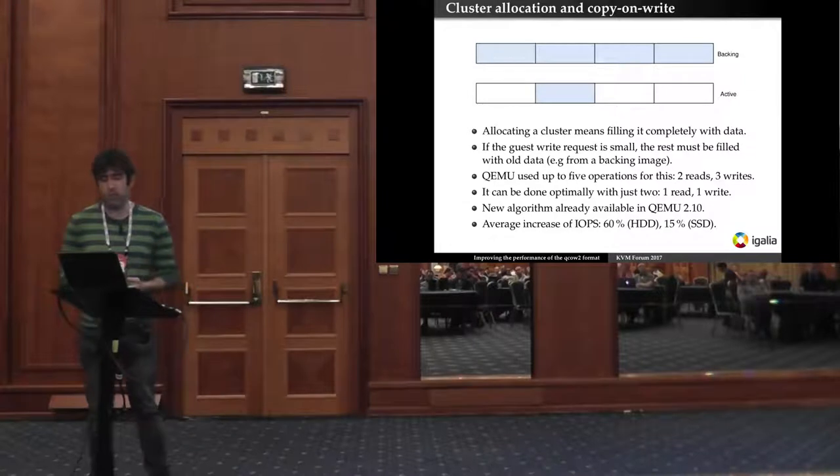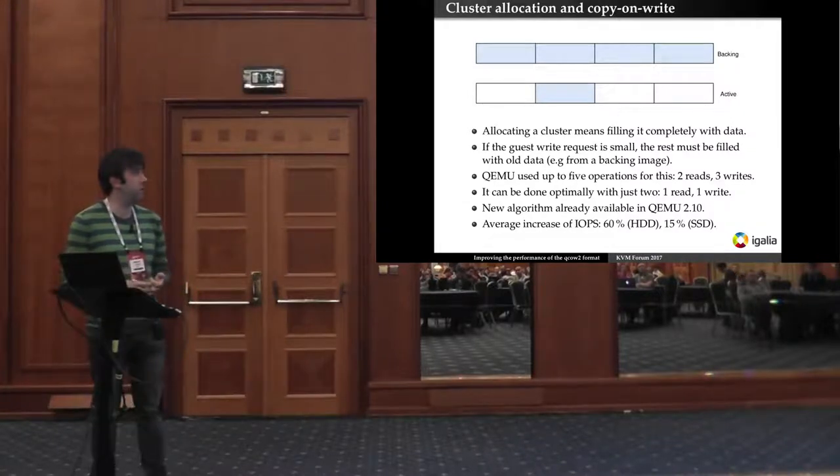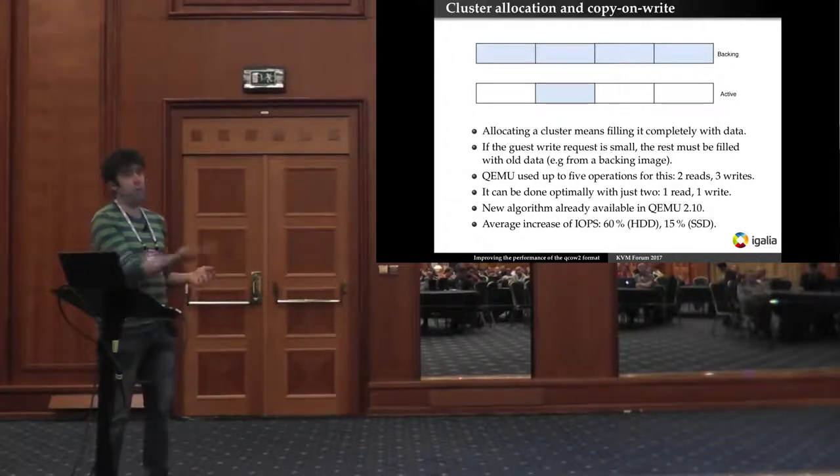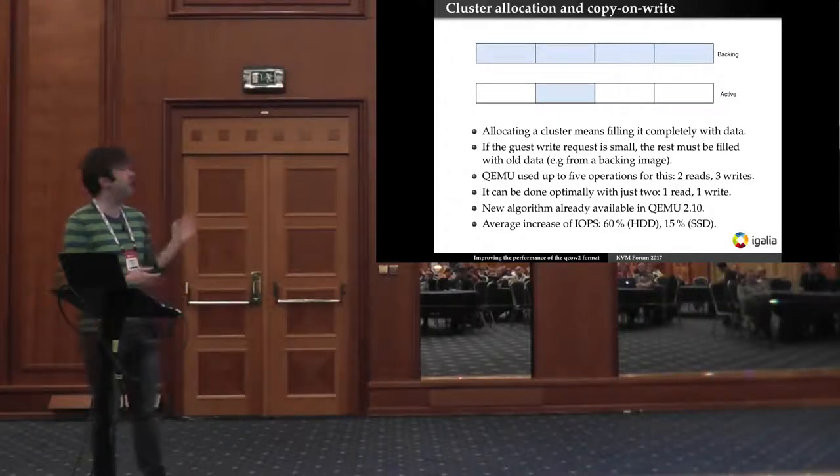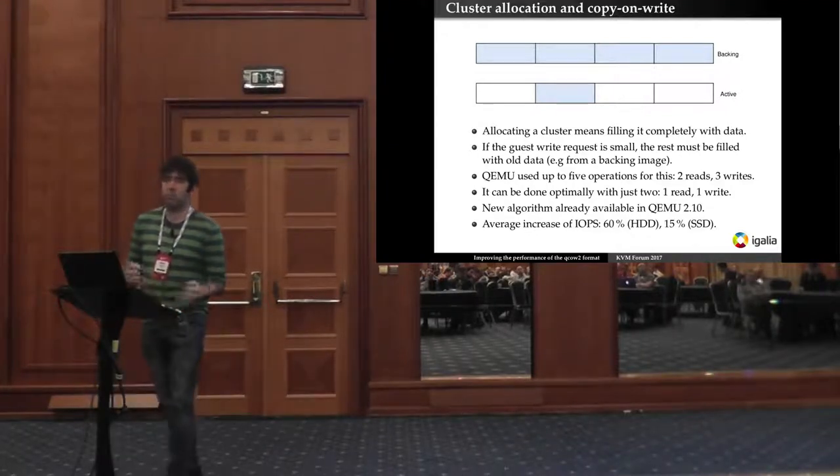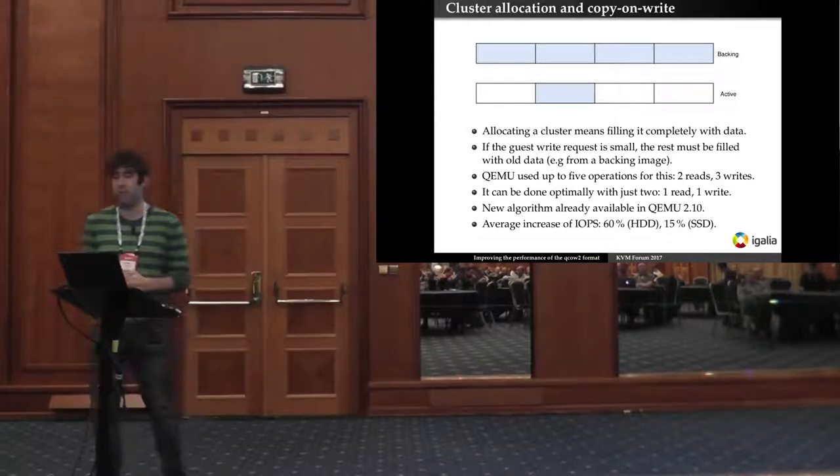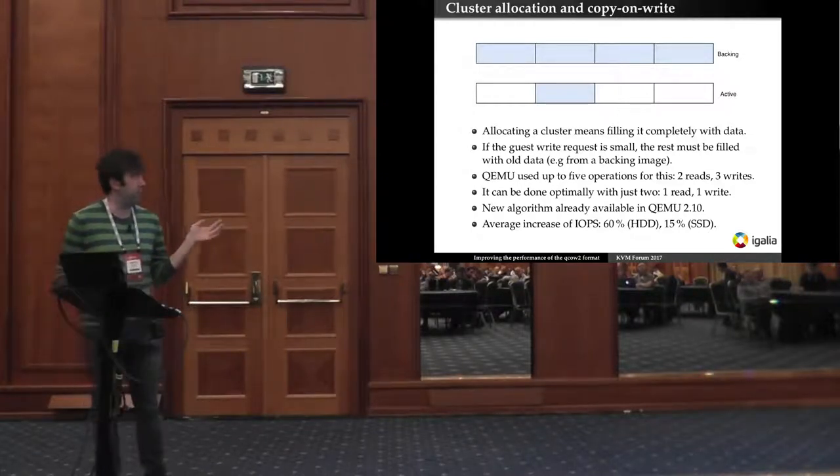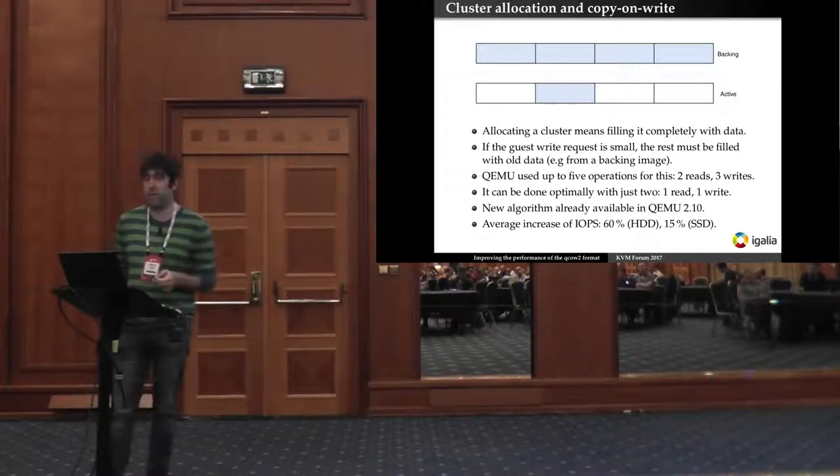However luckily this was fixed recently and now since QEMU 2.10 we are only doing two operations. We are reading the whole cluster from the backing image and we are writing it with the modified data into the new image. The results of this depend a lot on the scenario, depends a lot on the cluster size and the type of backend, but some averages that I produce with my test is 60% faster in the case of rotating disks and 15% faster in the case of SSDs.